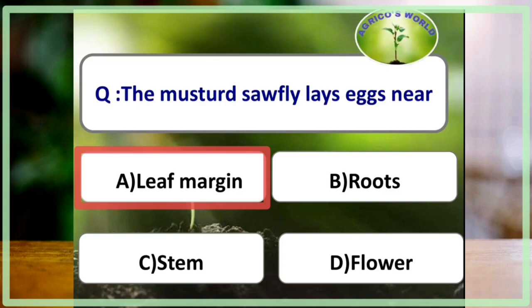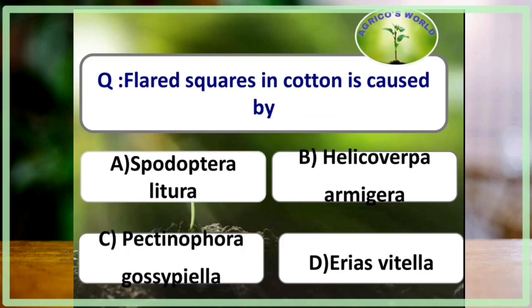The mustard saw fly, Athalia lugens proxima, lays eggs near the leaf margin. This is one of the very few insects that infest crops in India belonging to the order Hymenoptera.